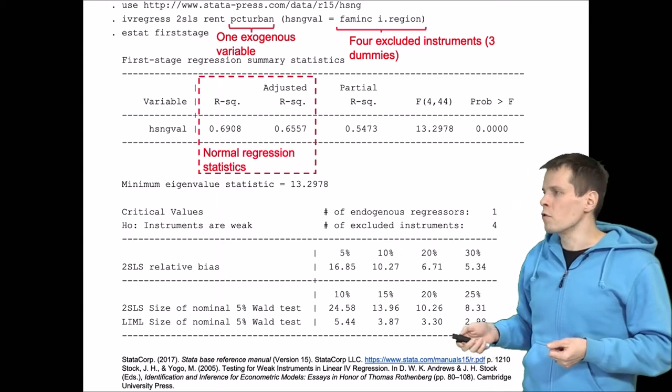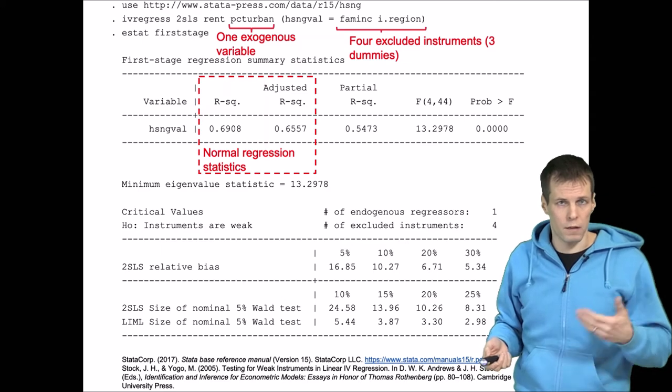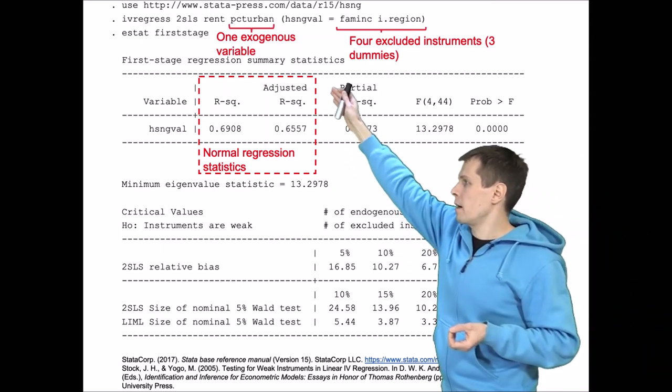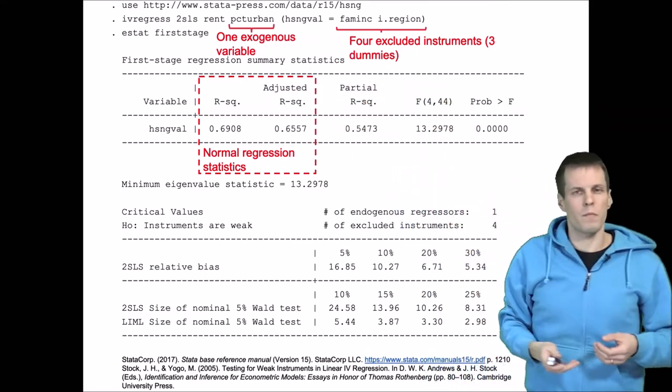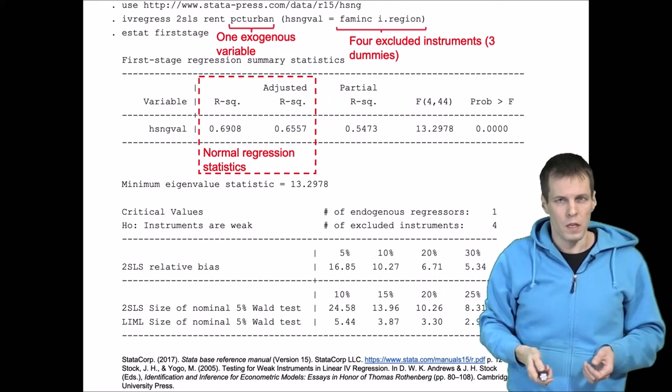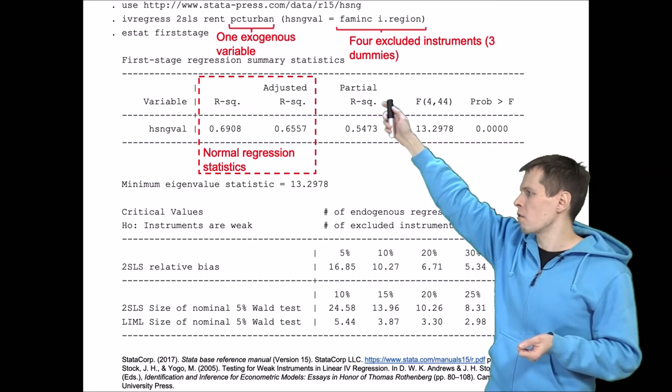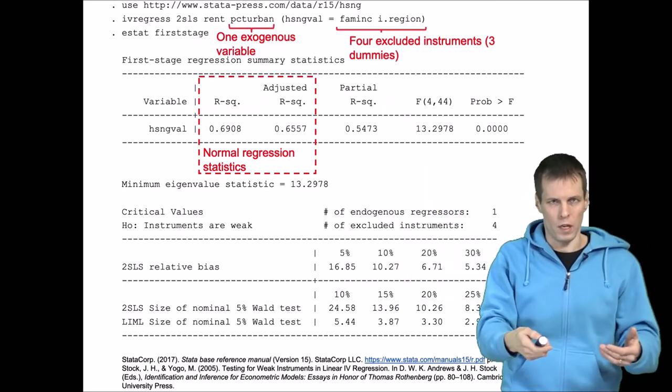The first two statistics are normal R-square statistics from that regression analysis. So if you just regress the endogenous variable on percent urban, family income, and three region dummies, you will get those R-squares. But those are not very relevant because we are using percent urban in the model, so it doesn't really add any new information for dealing with endogeneity.